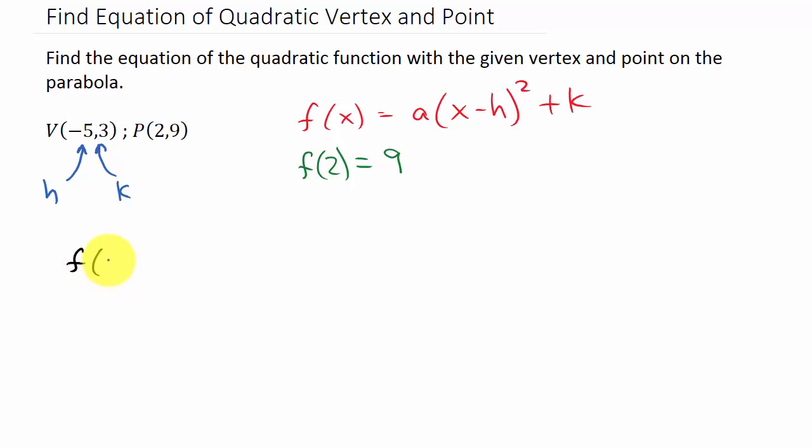So I have f of 2 is equal to a. We don't know what that is. And in the place of x, I'm going to put a 2 minus negative 5. Well, minus negative 5, a minus and a minus, that's plus. Okay. And that's squared. Plus, and then I put the 3 in for k. Okay. That's 3. And that should equal 9.